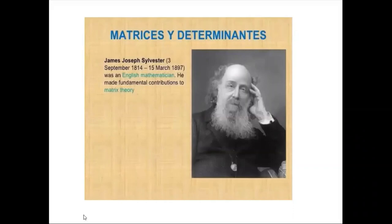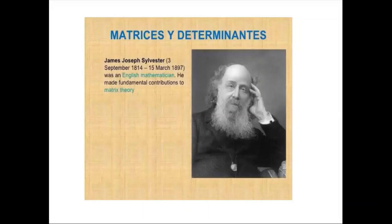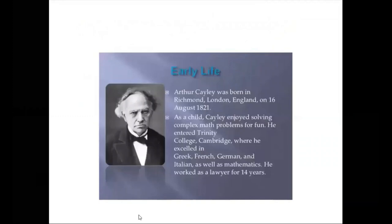And here comes James Joseph Sylvester. The term 'matrix' — the term we are using today — was introduced by him. Sylvester introduced this term in the 1850s. He actually defined a matrix as a rectangular array of terms out of which different systems of determinants may be engendered from the womb of a common parent. That was his definition of matrix, and he was the first to use the term.